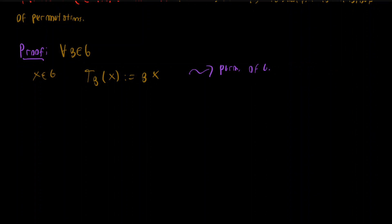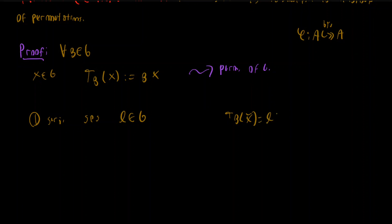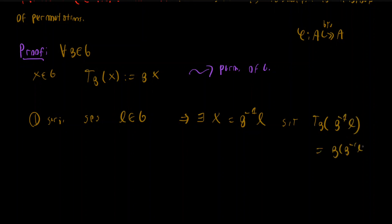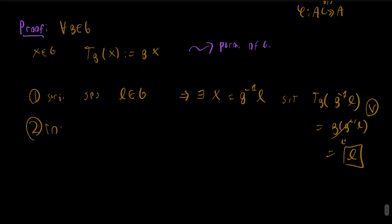We'll prove first that T_g is a permutation of G. Since permutations are bijections from a set to itself, we need to show T_g is a bijection from G to G. For surjectivity, suppose we have an element l in G. We can take x = g⁻¹·l, and then T_g(g⁻¹·l) = g·g⁻¹·l = l. So the mapping is surjective.